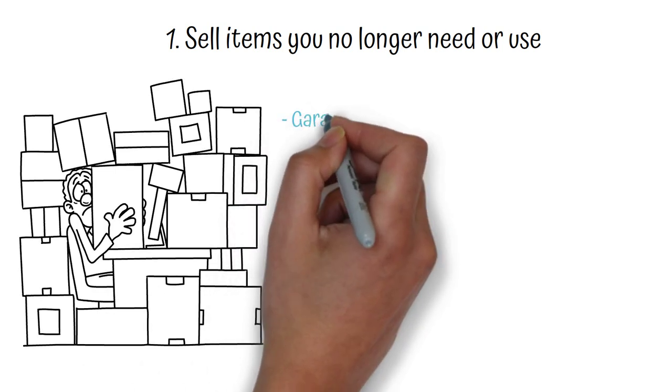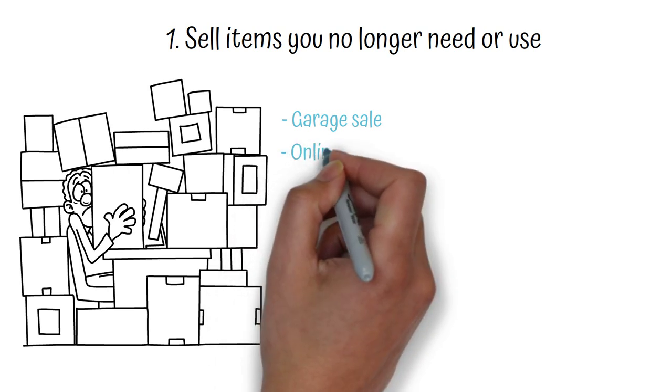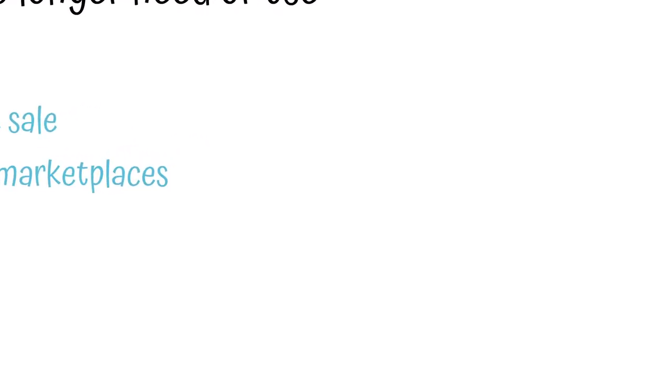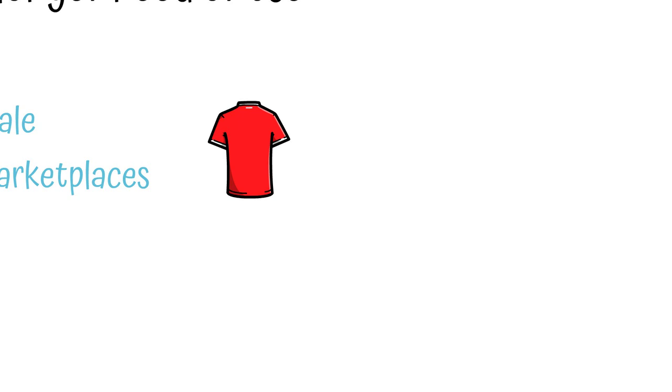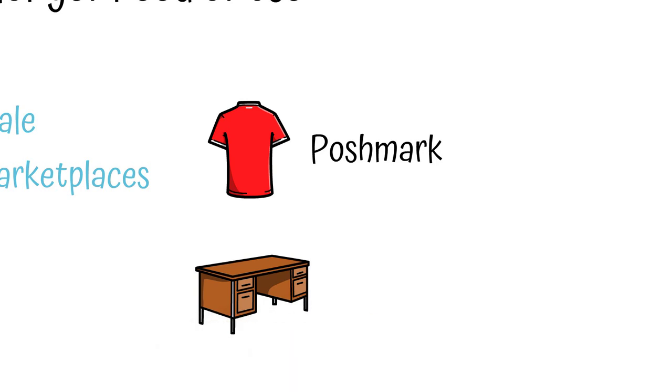You can consider having a garage sale or using online marketplaces like eBay, Facebook Marketplace, or Craigslist to sell your items. For example, if you have old clothes that you no longer wear, you could sell them on a site like Poshmark. Or, if you have furniture or household items that you no longer need, you could list them for sale on Craigslist.